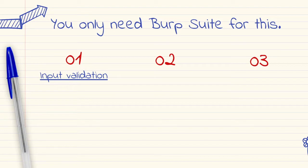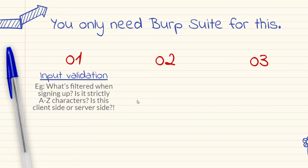Number one: input validation. What's filtered throughout the website? For example, when signing up, when creating an application, editing your profile, posting status updates — what's allowed, what's not allowed. Is it simply A to Z characters, or can you add symbols, HTML tags and things like that? A lot of the time when you're testing this, you will find it's not vulnerable — you're able to enter your XSS payload, but it's not vulnerable at all.